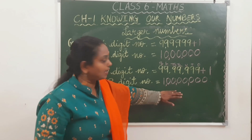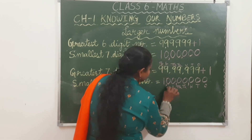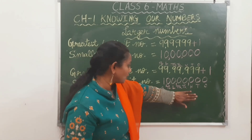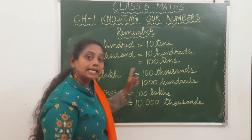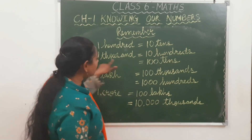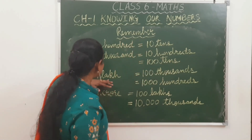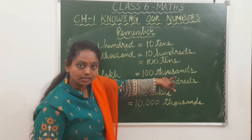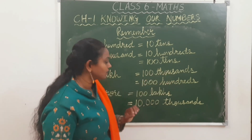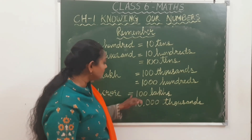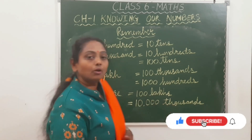This is 1 crore. The place values go: 1s, 10s, 100s, 1,000s, 10,000, lakh, 10 lakh, then crore. So the smallest 8-digit number is 1 crore. You have to remember: 100 is equal to 10 tens; 1,000 is equal to 10 hundreds, or 100 tens; 1 lakh is equal to 100 thousands, or 1,000 hundreds; 1 crore is equal to 100 lakhs, or 10,000 thousands.